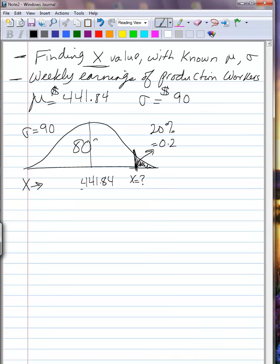So we know 80% or 0.8 of the area under the curve falls to the left of that x value that we are looking for, and 20% fall above it.